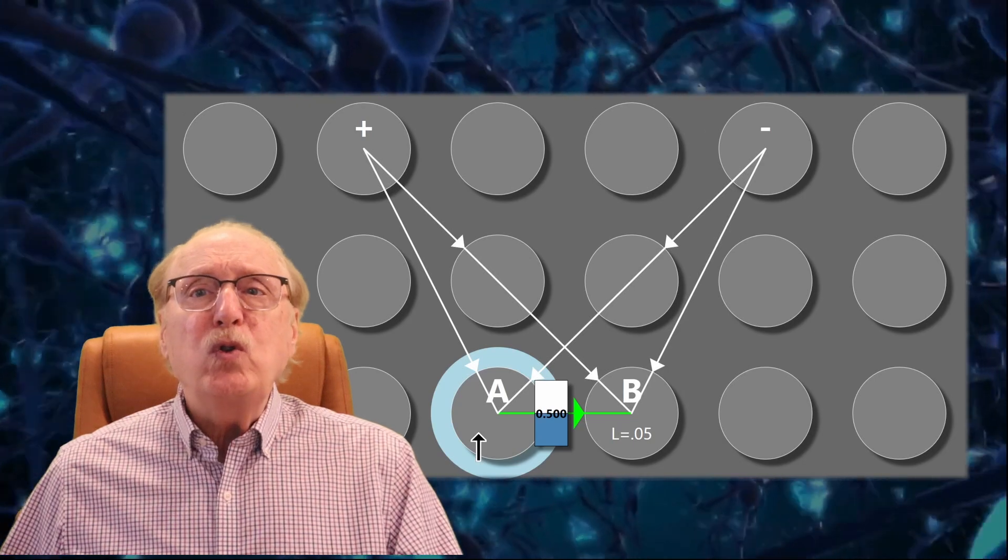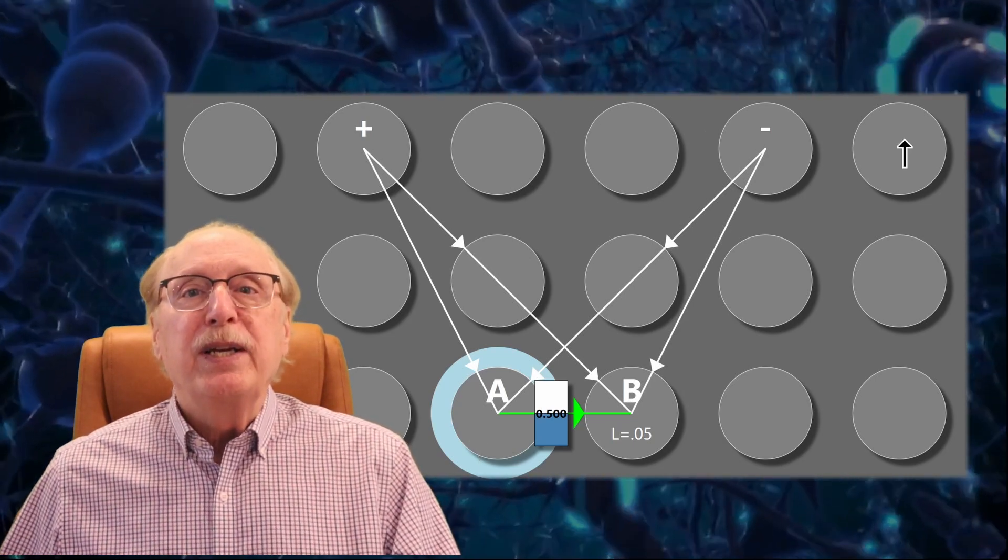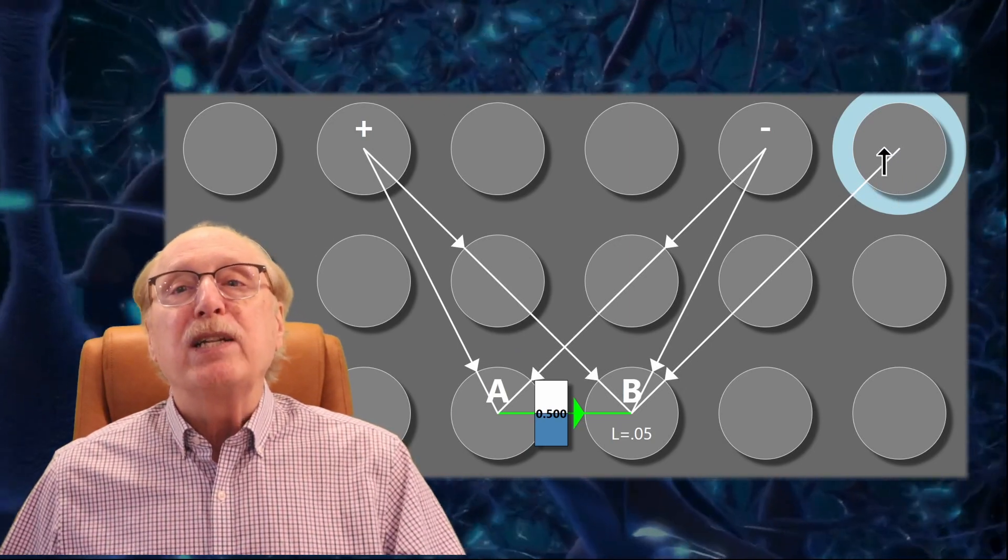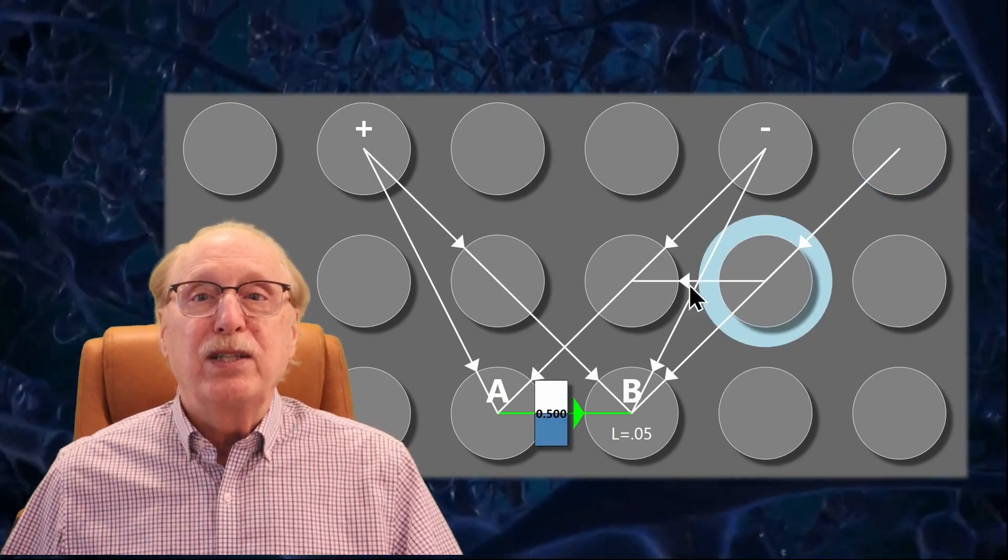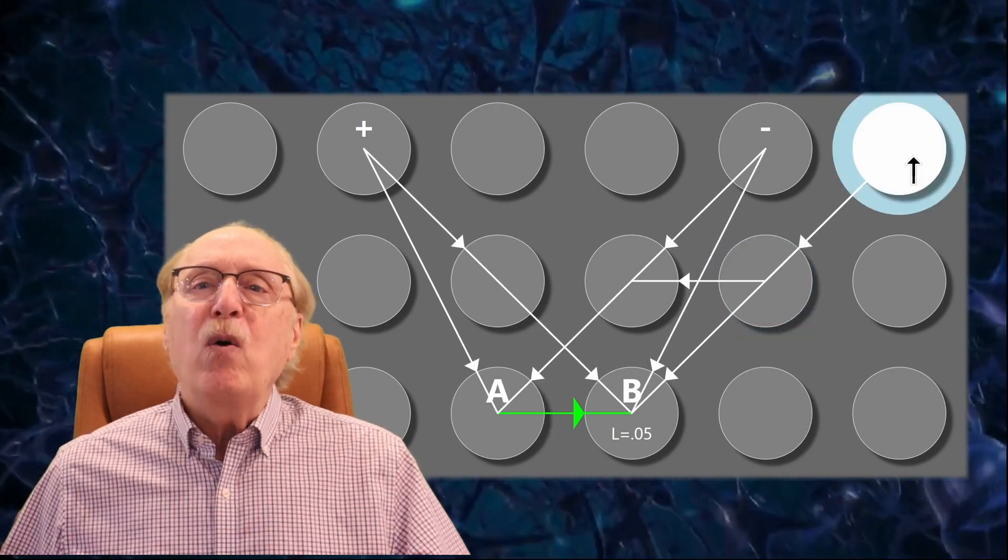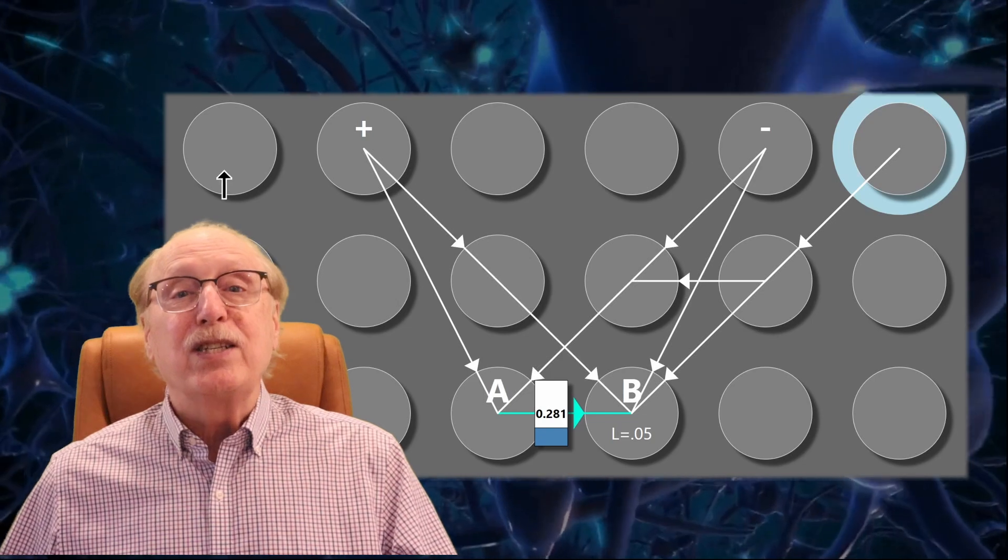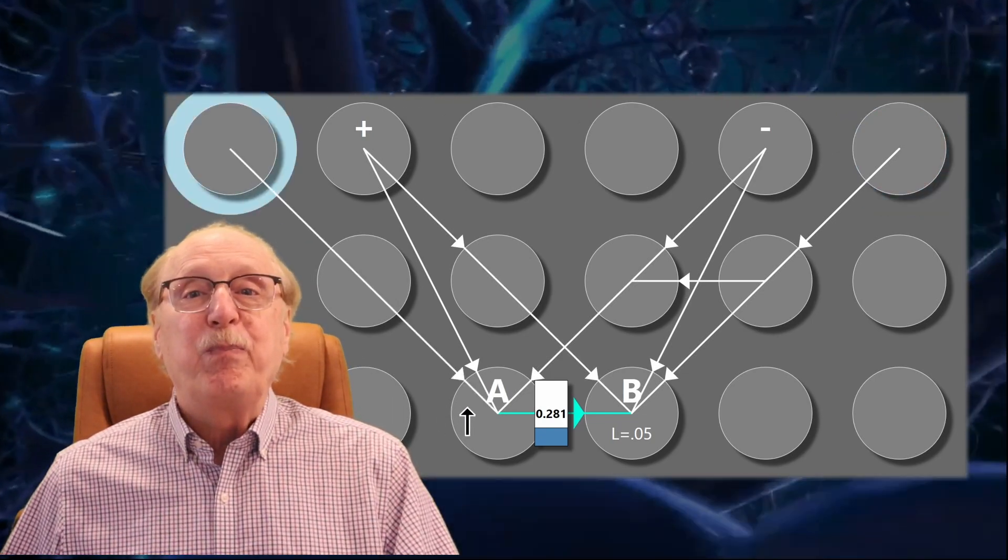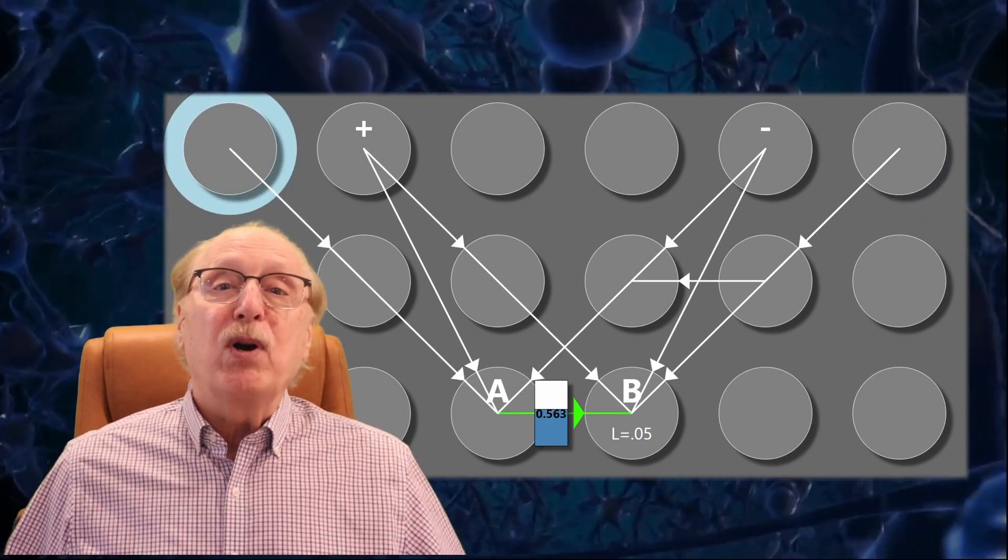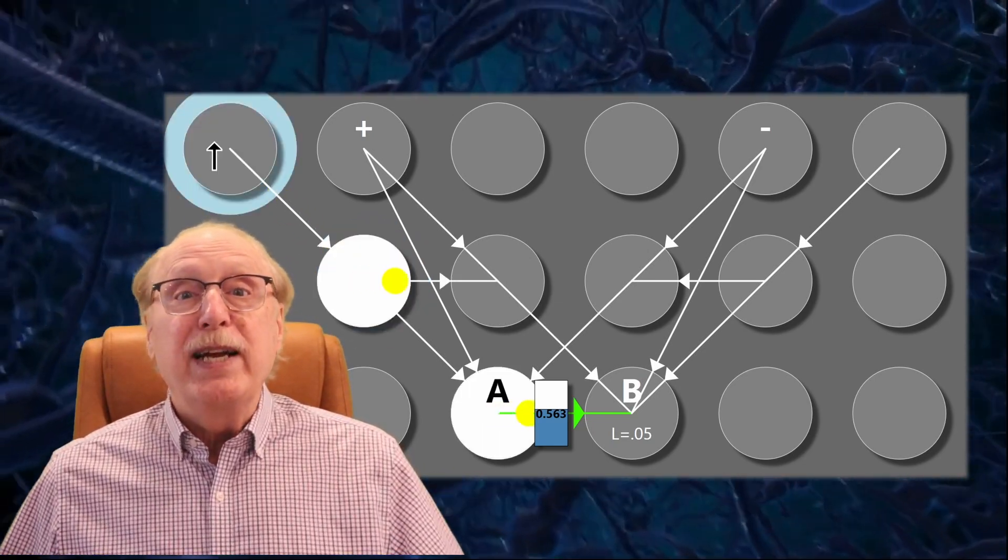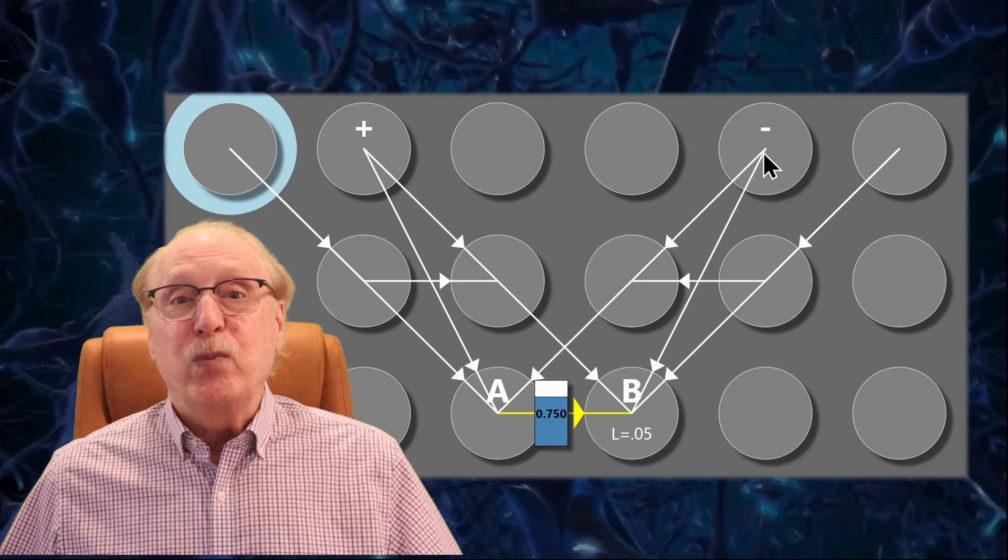But suppose we wanted more precision. Instead of a single neuron delay about 1ms, let's duplicate this circuit with 2 neurons of delay. Now we can reduce the weight by 25% instead of 50%. We can repeat this process by adding yet more neurons for more delay to create whatever precision we like.